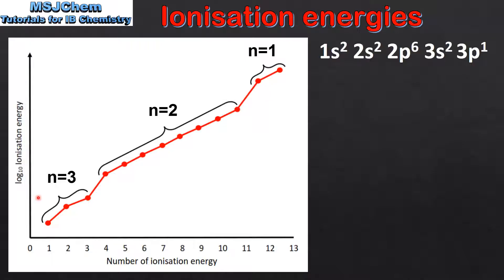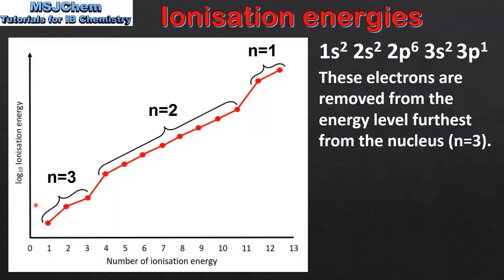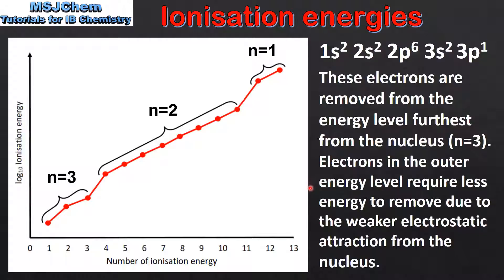We can divide this graph into three main sections labeled 1, 2 and 3. These three sections correspond to the main energy levels found in an atom of aluminium. Starting with the three electrons in the first section — these electrons are removed from the energy level furthest from the nucleus: the one electron in the 3p sub-level and the two electrons in the 3s sub-level. Electrons in the outer energy level require less energy to remove due to weaker electrostatic attraction from the nucleus.